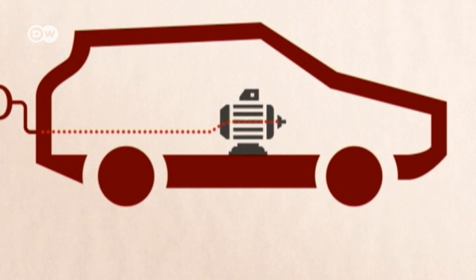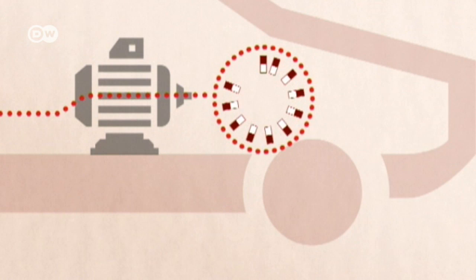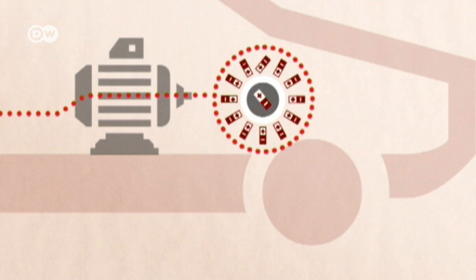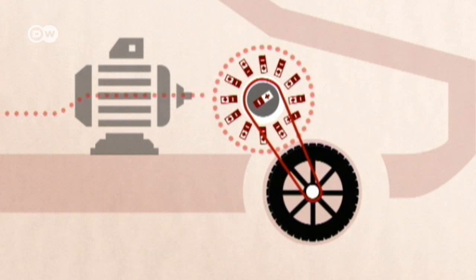The electricity in the batteries is delivered to the motor. Inside the motor are two kinds of magnets. Their opposite forces create motion. This movement in turn causes the wheels of the car to turn.